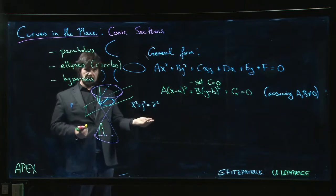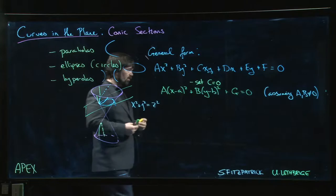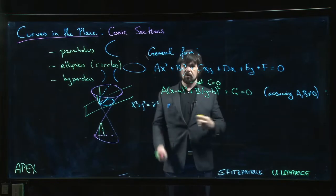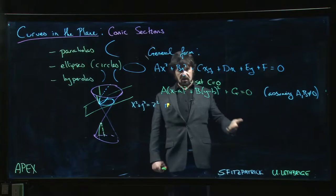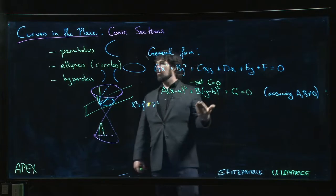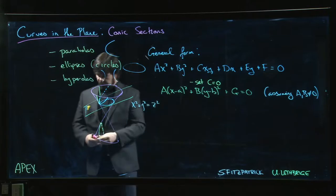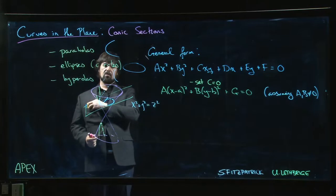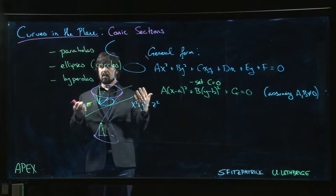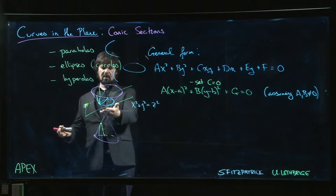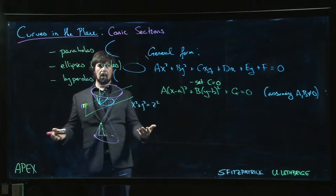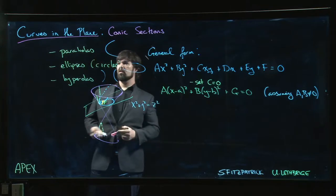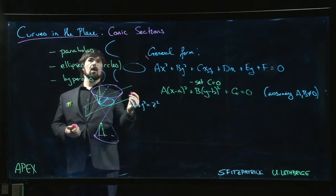We are of course going to take this analytic approach. We're going to write everything down in terms of equations because that's what we do - we're doing calculus. We want to write things down in terms of equations, graph them, look at tangents, areas, things like that. One of the things you used to do when this stuff was covered in high school is you actually start defining these curves not in terms of this intersection with a cone, not in terms of an equation, but in terms of certain properties.